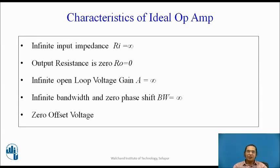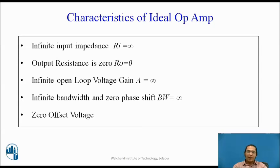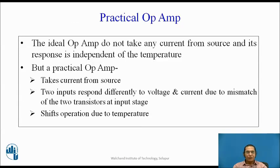We already discussed the characteristics of an ideal op-amp, which include infinite input resistance (Ri = infinity), zero output resistance (R0 = 0), infinite open loop voltage gain (A = infinity), infinite bandwidth with no phase shift between output and input signal, and zero offset voltage. However, there is no ideal device in reality, and we have what is called a practical op-amp.